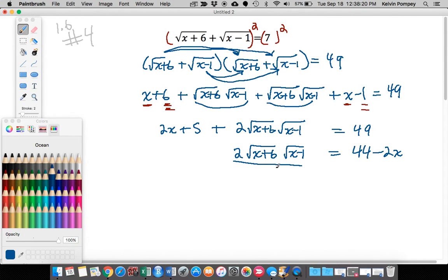I'm going to also divide both sides by 2 just to save me a little bit of time and space here. When I divide both sides by 2, I get square root of (x+6) times square root of (x-1) equals 22 minus x.